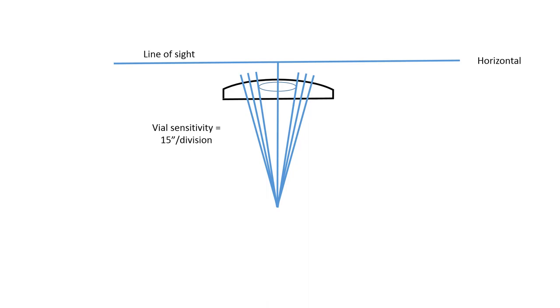Here on my diagram you can see my horizontal line of sight and perpendicular to that is a vertical line that goes right down through the middle of the level vial on my optical level.